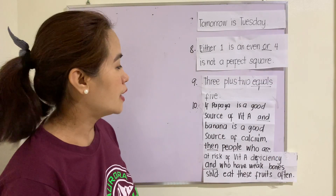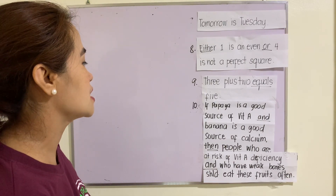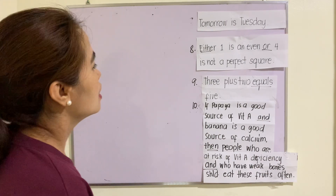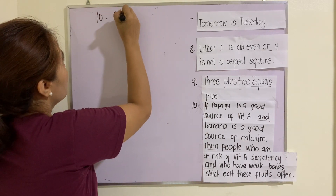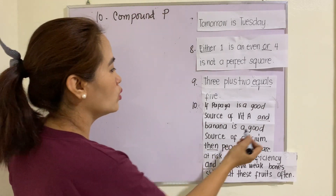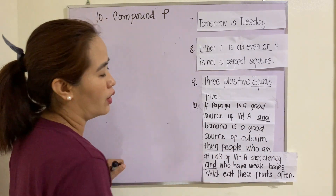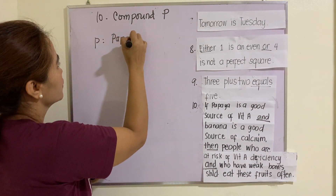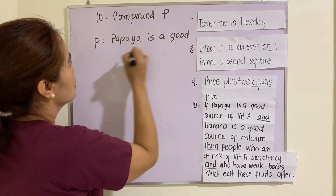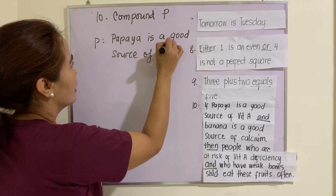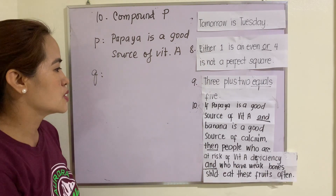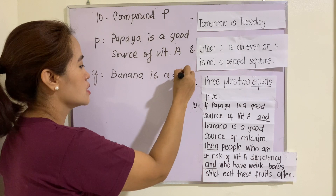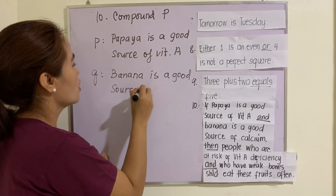Number ten: 'If papaya is a good source of vitamin A and banana is a good source of calcium, then people who are at risk of vitamin A deficiency and who have weak bones should eat these fruits often.' This one is a compound proposition. We use the connectors 'and', 'then', and 'and' again. There are four sub-propositional variables. The first is p - 'Papaya is a good source of vitamin A', and q - 'Banana is a good source of calcium.'